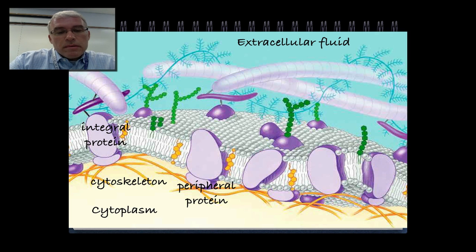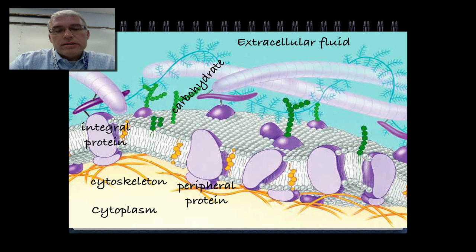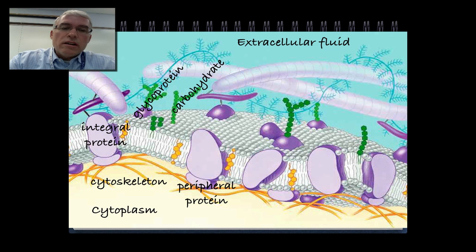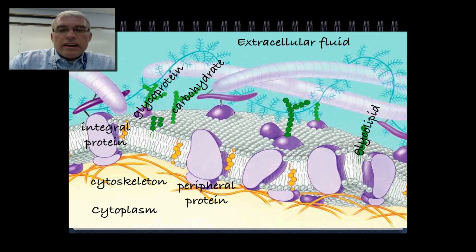Stuck to integral proteins on the inside or outside are peripheral proteins — proteins not embedded in the phospholipid bilayer but attached to it in some way. Also attached to the cell membrane are carbohydrate chains, shown in green in this picture. If those carbohydrates are attached to proteins, they're called glycoproteins — 'glyco' referring to the carbohydrate nature of the chain, like glucose. If they're attached to lipid molecules, they're called glycolipids.